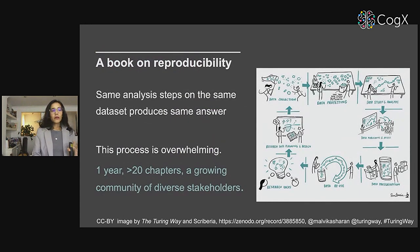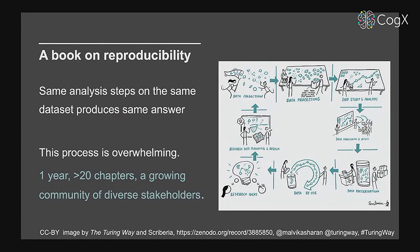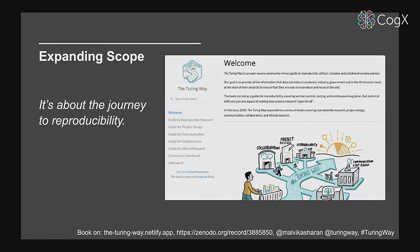A little over one year in, we now have 20 chapters and a growing community of diverse stakeholders — developers of the book, readers, authors, reviewers, educators, and learners all around the world. As the community grows, our scope is also expanding: our resources now include more specific topics on project design, communication, collaboration, ethics, and a meta-book on how we maintain this community. As researchers, we are given training on data analysis and statistical methods, but it is often assumed that we know how to collaborate, who to involve, what ethical decisions to make, and how to communicate our research outcomes — but the fact is, we are often not formally trained in these skills.